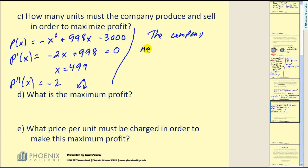So that's good news. The company needs to produce and sell 499 stereos. Well, of course, the next question is going to be, what would the maximum profit be?